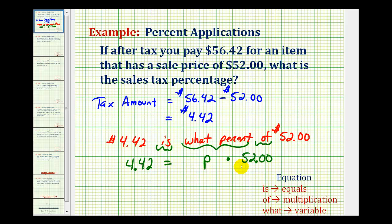So to solve this equation for p, we have to undo this multiplication. So we're going to divide both sides by $52.